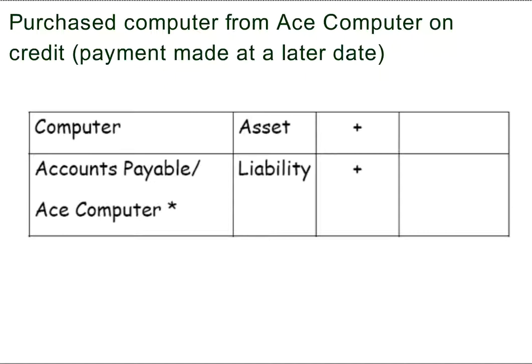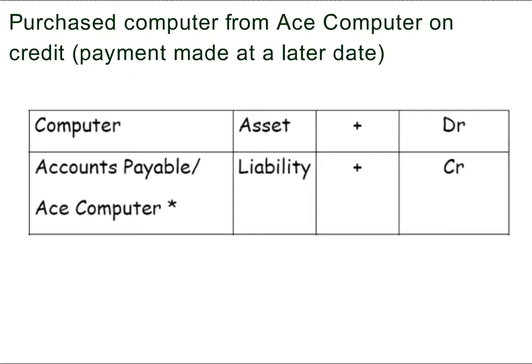The asset is increasing and the liability is increasing. The asset computer increases on the debit side. The liability Accounts Payable increases on the credit side.